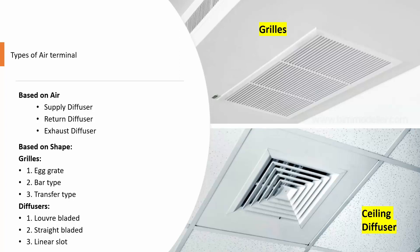There are basically three types based on the air supplied or removed from the room: supply diffuser, return diffuser, and exhaust diffuser. Based on shapes, there are grills and diffusers — egg grid or bar type, transfer type, louvre bladed, straight bladed, and linear slot. Within those, there are different diffusers based on direction: one direction, two direction, all four sides, and corner diffusers. Round and rectangle/square types are also available.